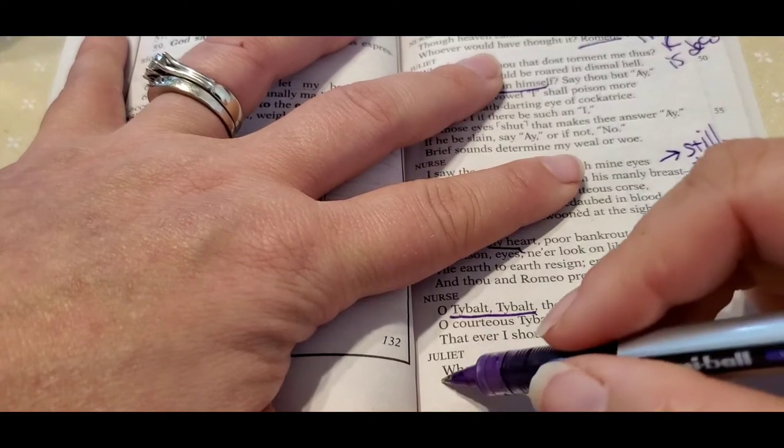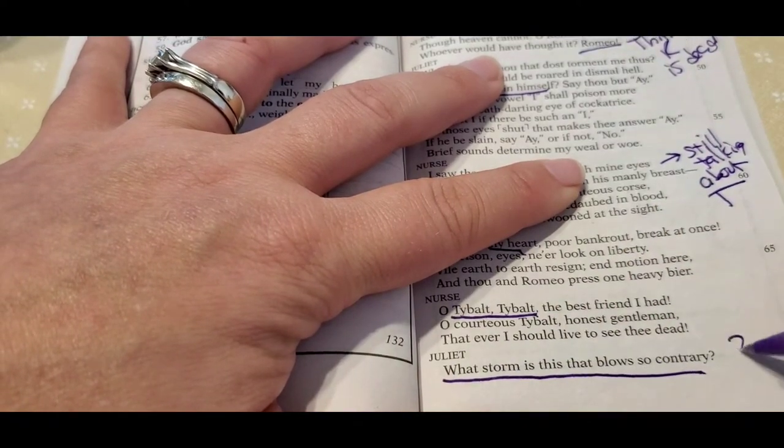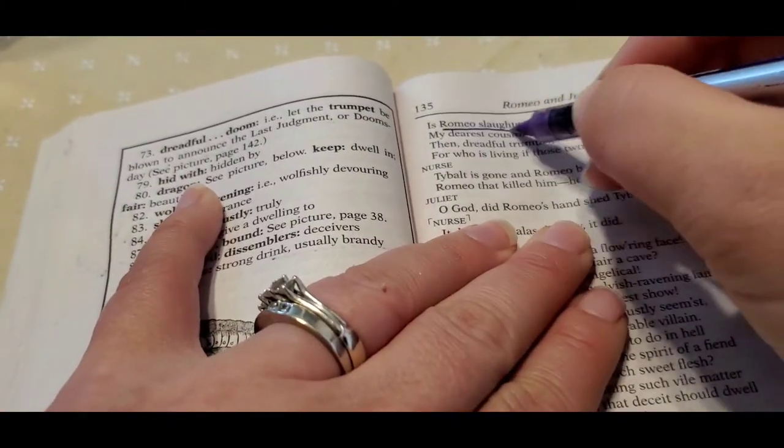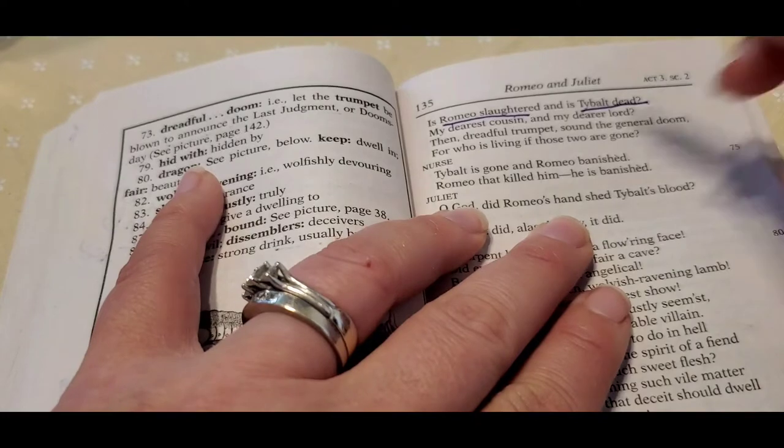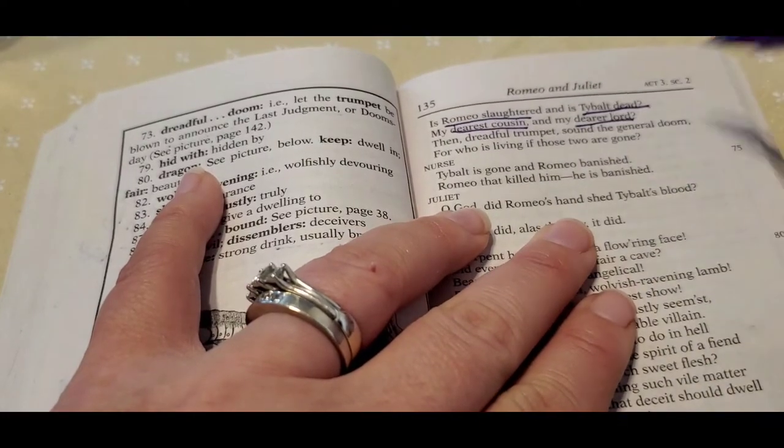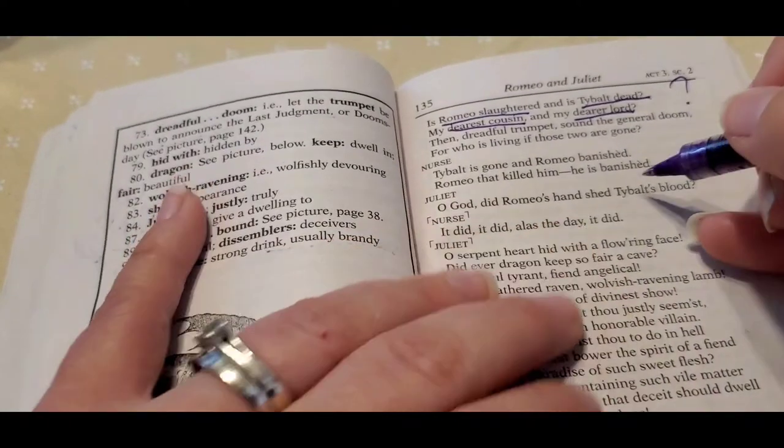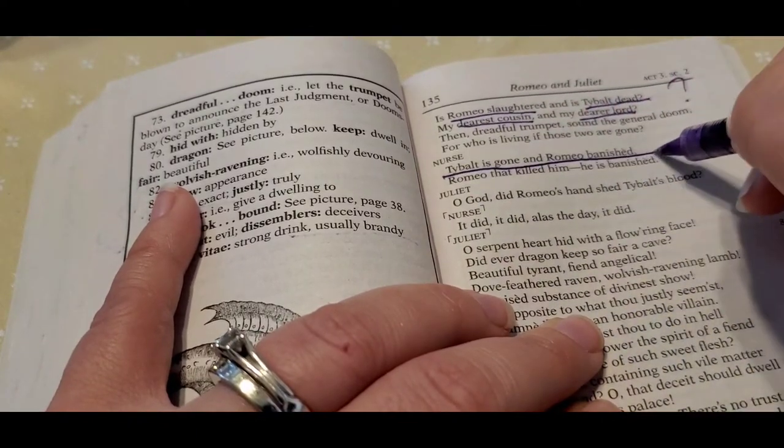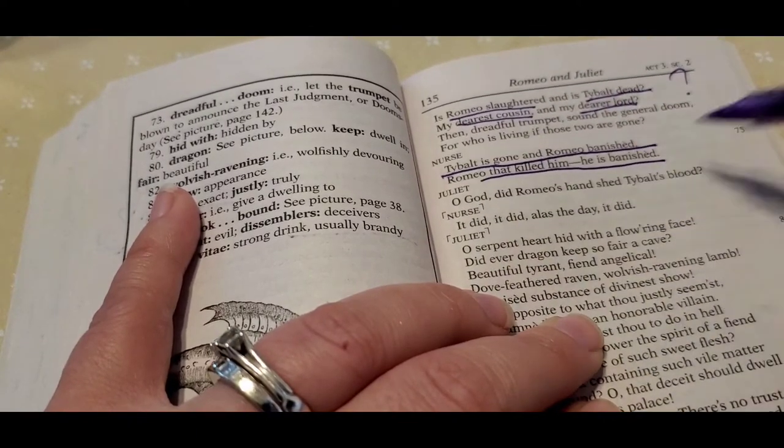And then Juliet's like, what? I'm so confused. What's so contrary going on here? What's happening? And so she's like, Romeo is dead and Tybalt's dead. My dearest cousin and my dearest Lord. What? So she says, Tybalt's gone. So this is actually what's correct. And Romeo is banished. Romeo killed him. He is banished.